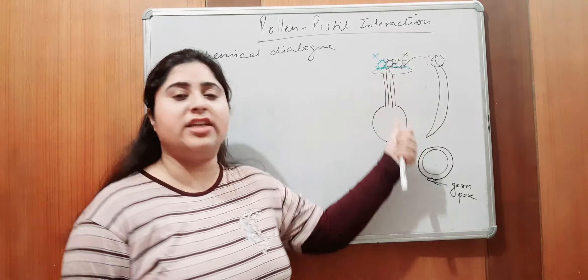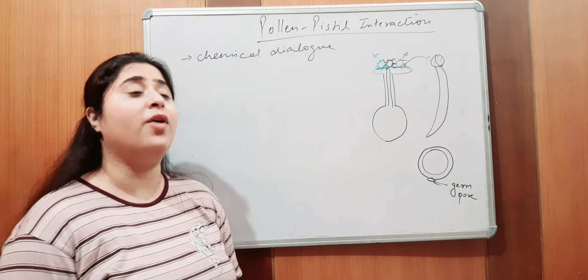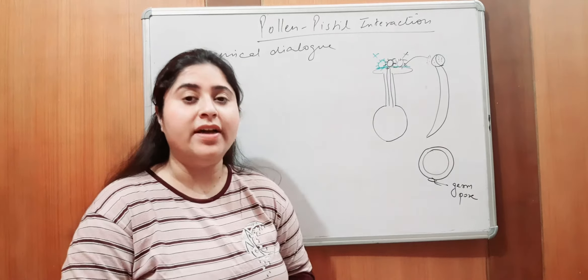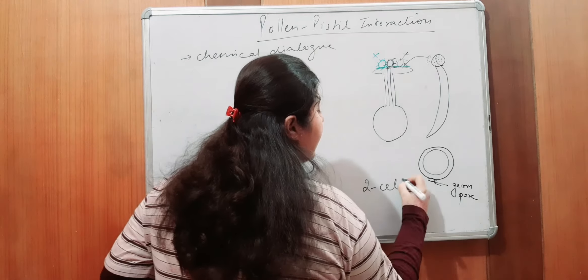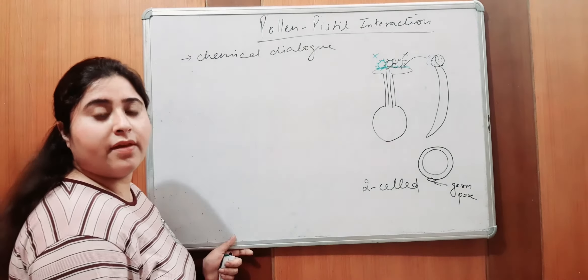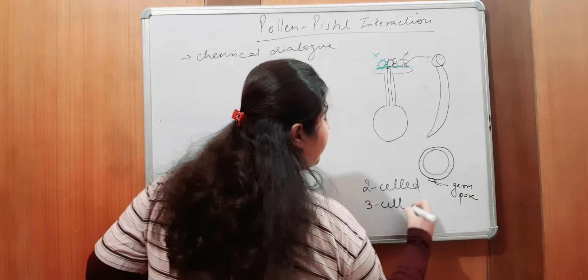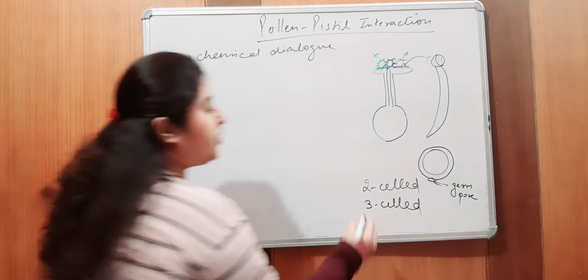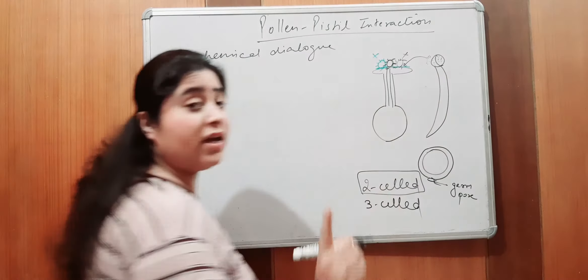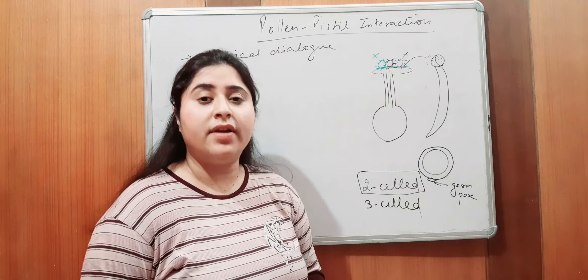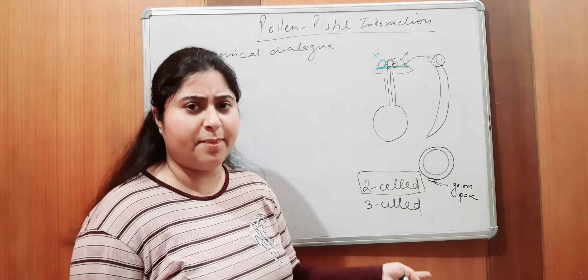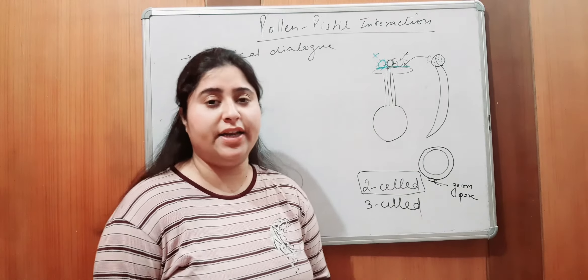Now suppose, the pollen tube has been formed, it is entering inside it. If you do remember, jab pollen grains shed hoote hai, toh in most of the cases, they are shed in two-celled stage. Right? 60% of flowering plants mein, two-celled stage mein shed hoote hai. And another 40% of flowering plants, they shed in three-celled condition. Agar two-celled condition hai, ham nahi detail mein padha tha. Please, go and get a quick review from my previous videos. Right? So, two-celled condition ho sakti hai, in most of the flowers it happens. And the second one is three-celled condition.